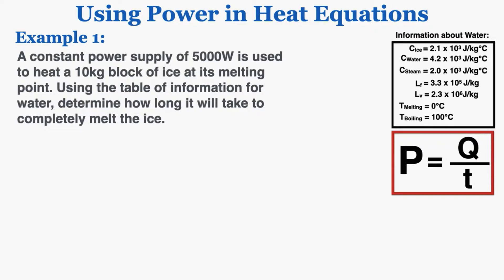As an example, a constant power supply of 5,000 watts is used to heat a 10 kilogram block of ice at its melting point. Using the table of information for water, determine how long it will take to completely melt the ice.